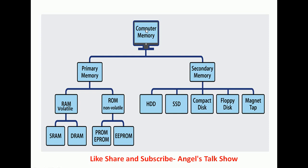In the next slide we have a diagram where we can see that computer memory can be classified into two different types: primary memory and secondary memory. Primary memory is divided into two memories — RAM and ROM. RAM stands for Random Access Memory and ROM stands for Read Only Memory. RAM is volatile in nature while ROM is non-volatile. RAM is further divided into SRAM (Static RAM) and DRAM (Dynamic RAM). ROM is classified into PROM, EPROM, and EEPROM.